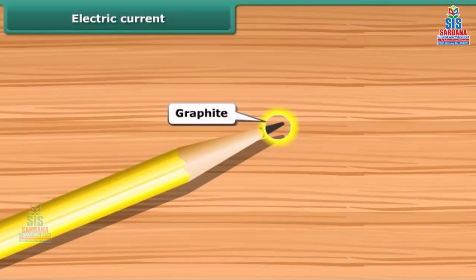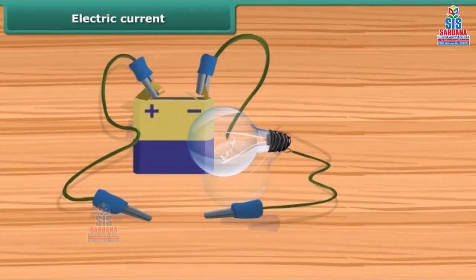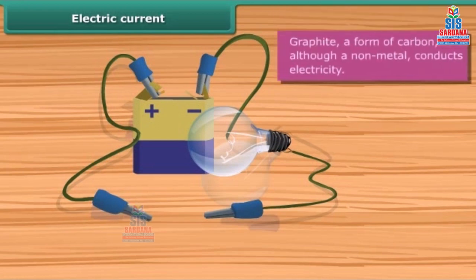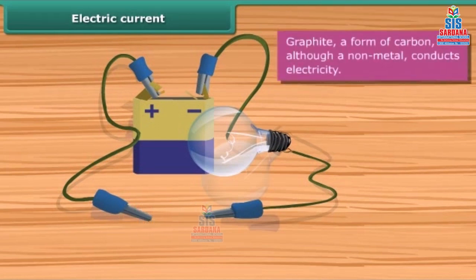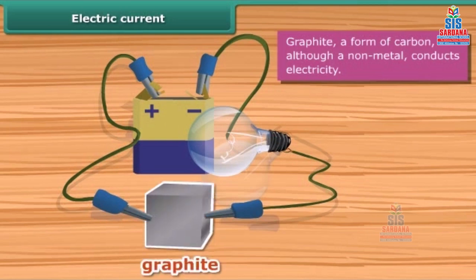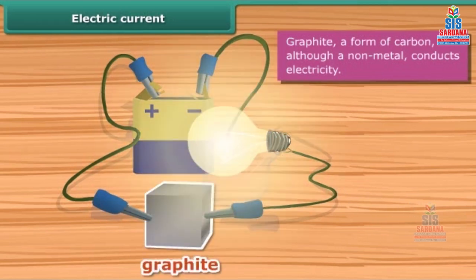It can be tested whether a given material is a conductor of electricity or not by placing the material between the free ends of wires in an electric circuit. Bring the free ends of the two wires close, then let them touch each other. If the bulb glows, the material is electrically conducting; otherwise, it is an insulator.